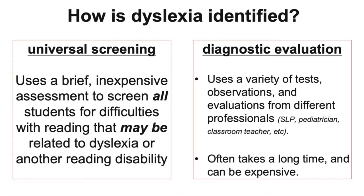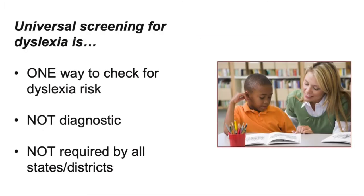Diagnosing or determining if an individual person has dyslexia involves a variety of tests administered by a variety of people. There may be tests of reading and oral language ability, classroom or one-on-one observations, interviews or surveys with parents and teachers, evaluation by a speech-language pathologist, and possibly other kinds of assessments. This process can often take a long time and can be expensive, not to mention stressful, for the individual and for their parents or caregivers. Universal screening is not a replacement for the full diagnostic process, but universal screening in schools — usually around kindergarten through second grade — is one way to identify students who may be at risk for dyslexia or other reading issues.